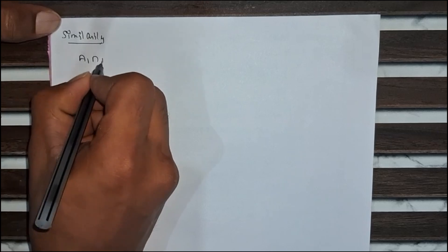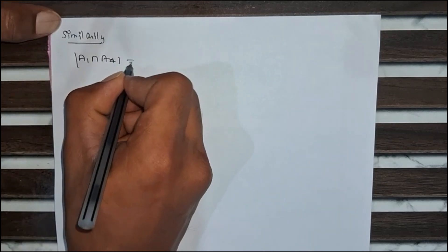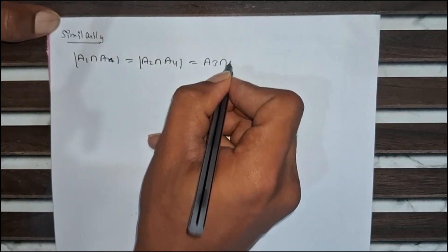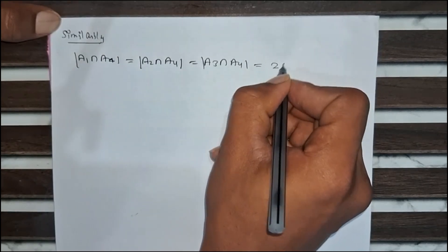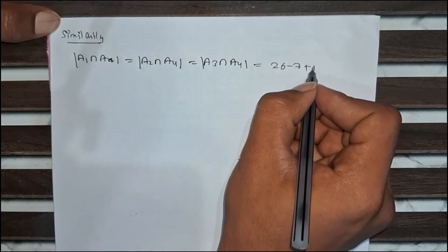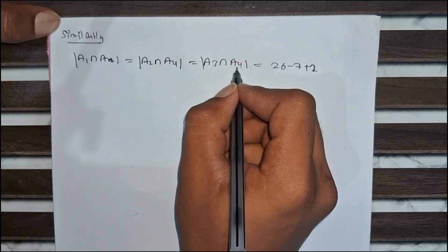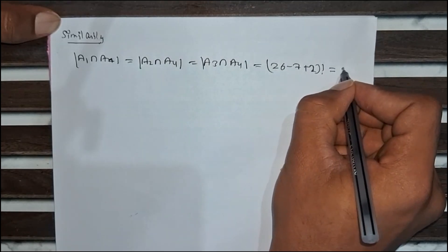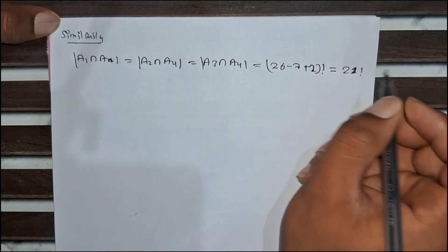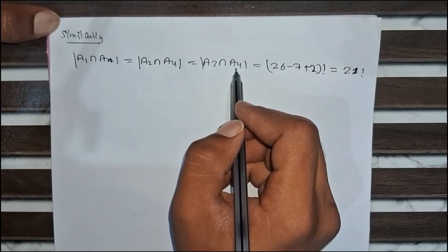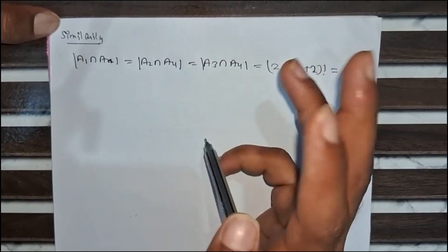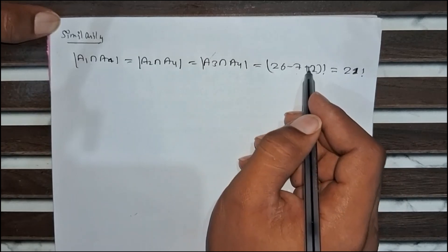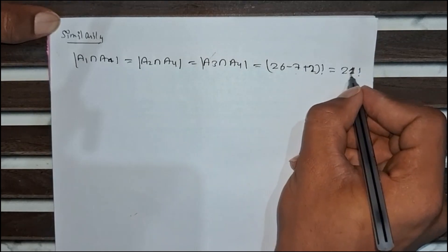Similarly, A1 ∩ A4 = A2 ∩ A4 = A3 ∩ A4. A1 (or A2 or A3) contains three letters and A4 contains four letters, giving seven letters total forming two blocks. So we get 26 minus 7 plus 2 factorial, which equals 21 factorial.